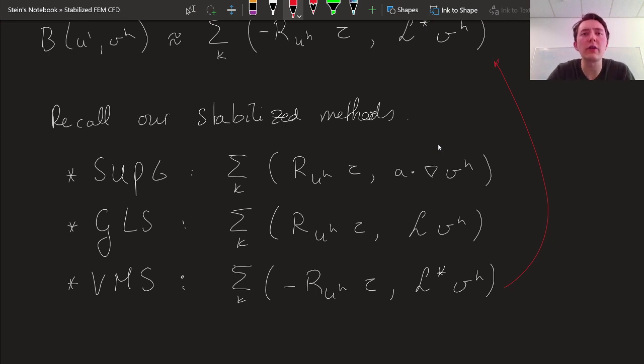So how do these other two fall into place now? Well first motivate the SUPG method and then the Galerkin least squares method. And it's actually going to be pretty straightforward.